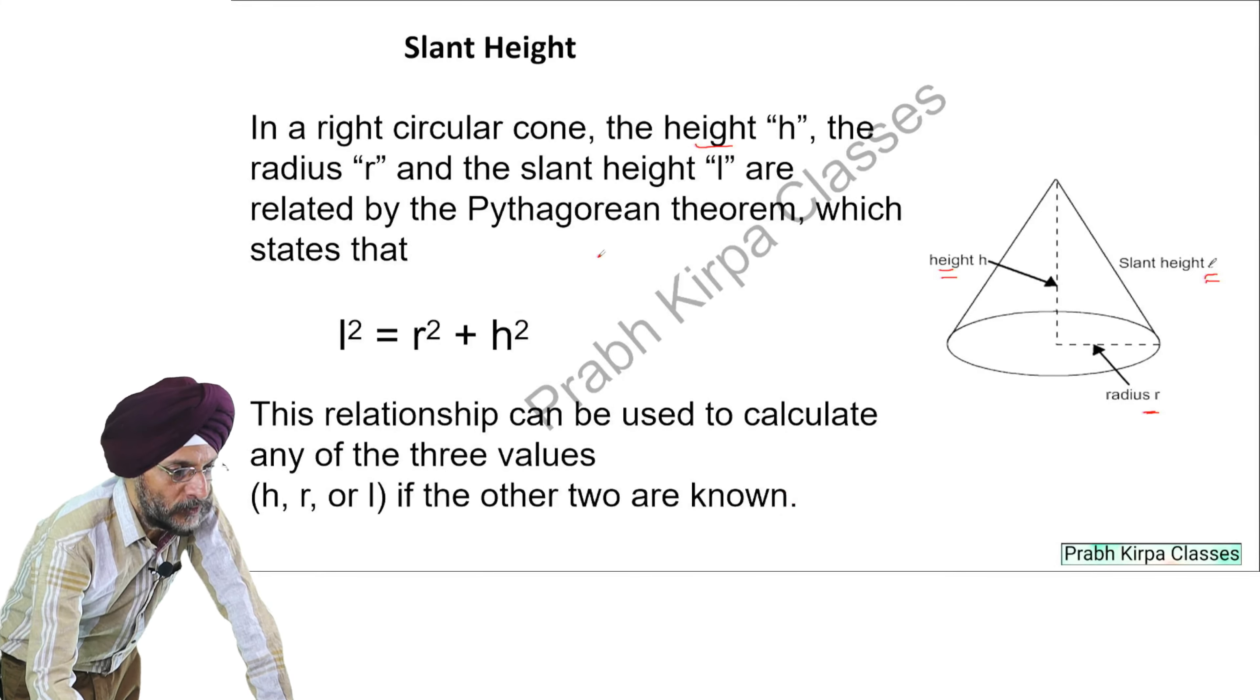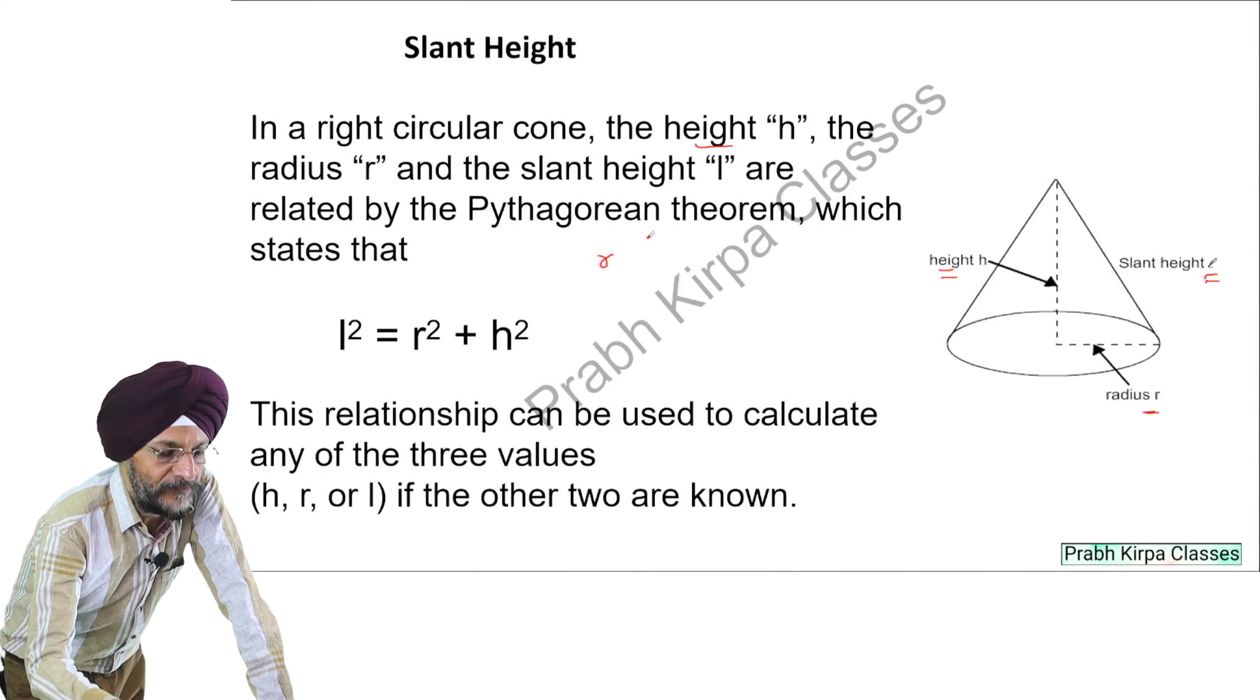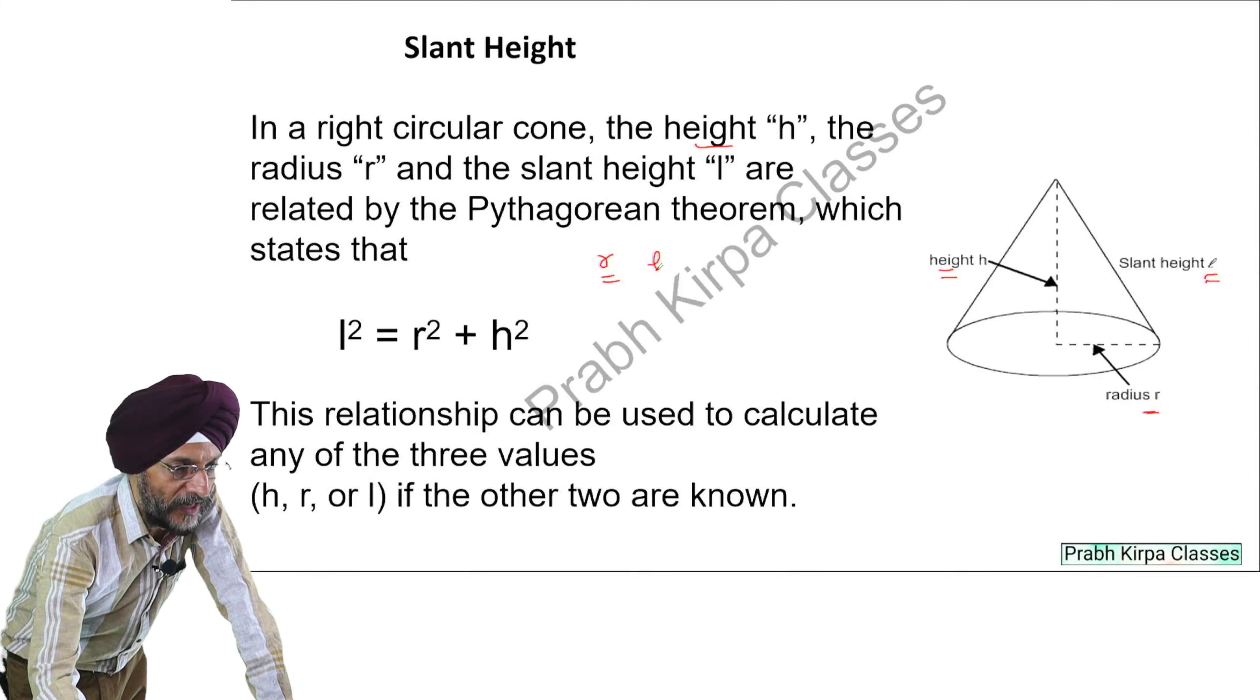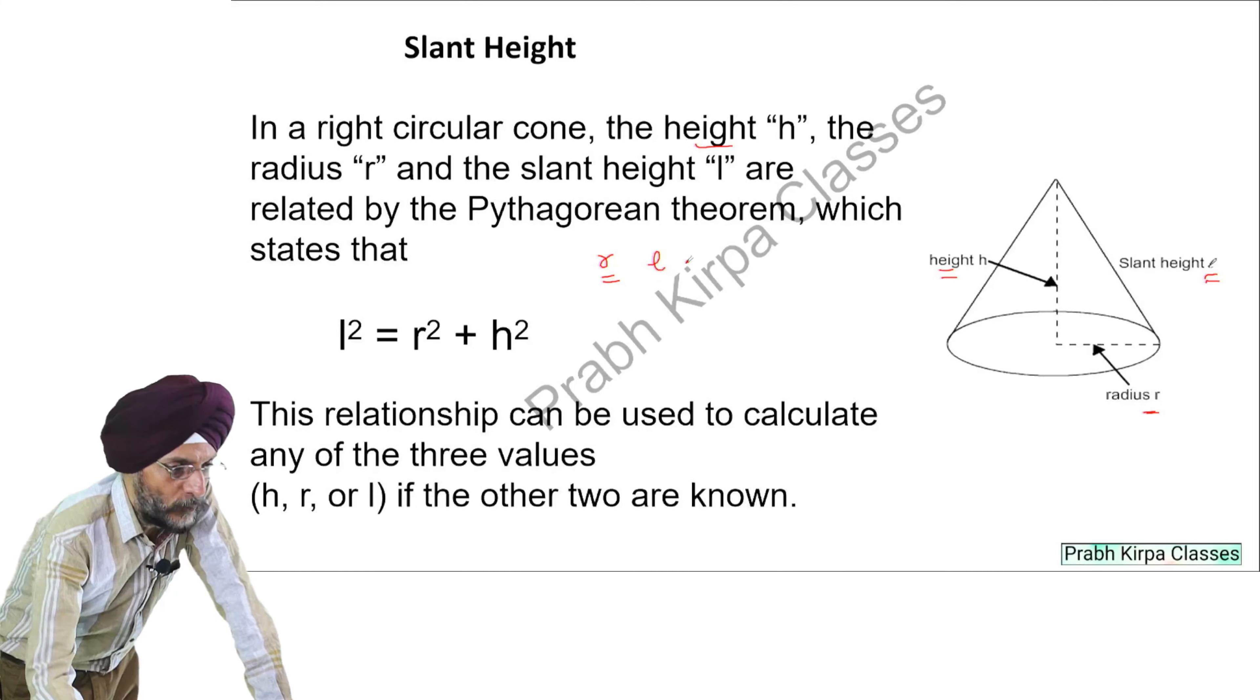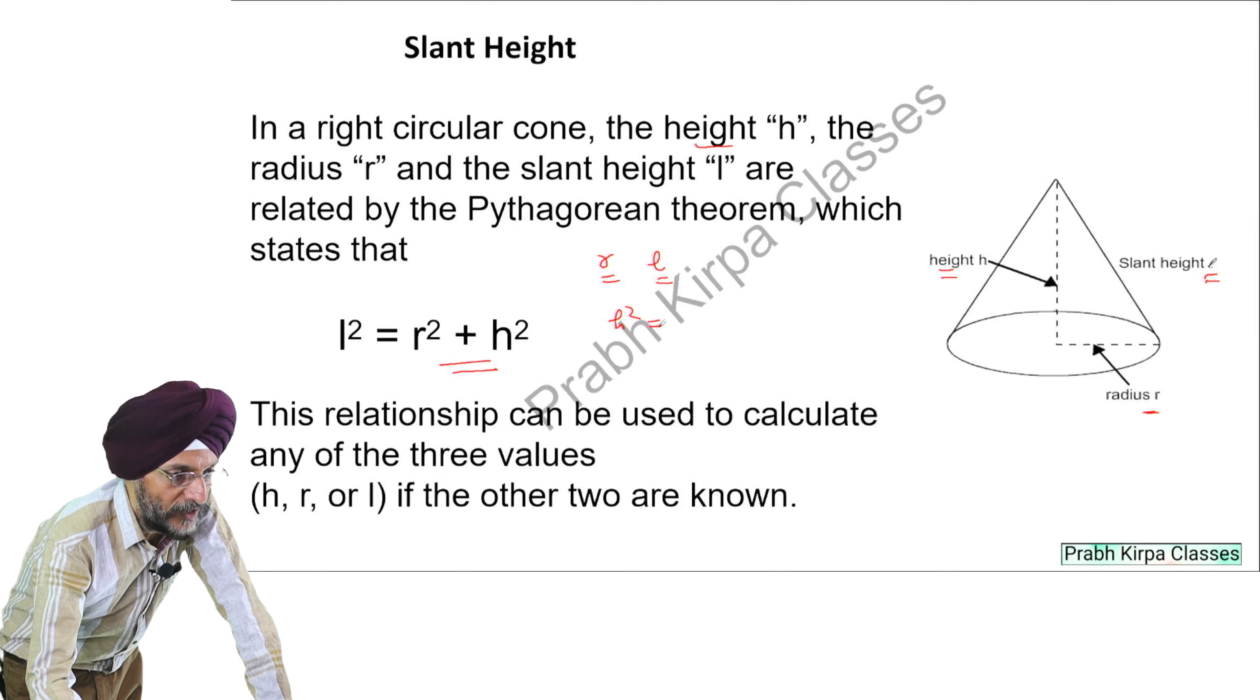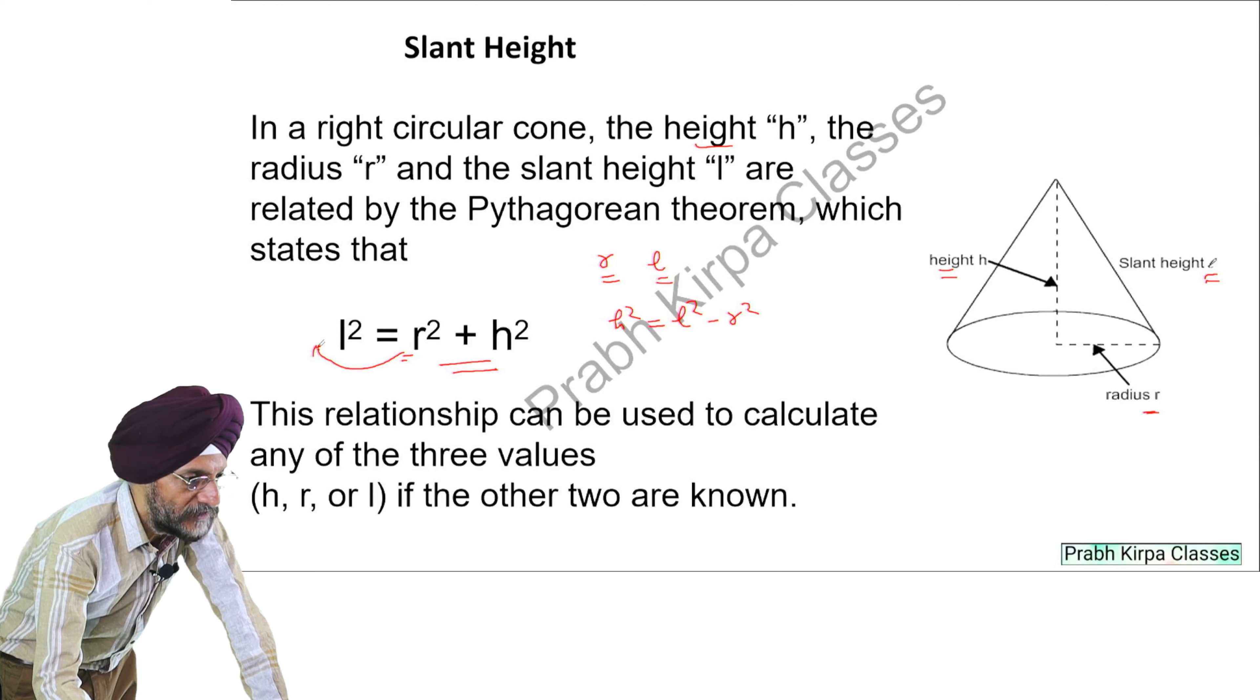It means that suppose we have been given in any mathematical question the value of R and the value of L. Then we can calculate the value of H. How can we calculate? From this formula, we can calculate H² = L² - R² because R² will go to this side and it will become minus.